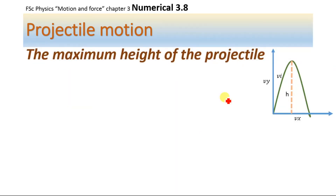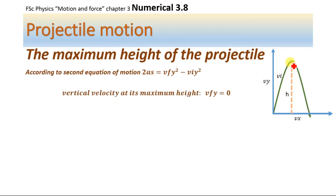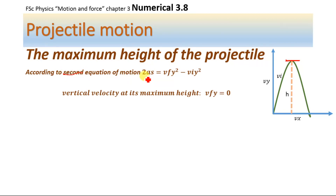What is the maximum height of the projectile? The maximum height is the height which a projectile reaches. This is the path followed by the projectile and this is the maximum height. For calculating the maximum height, we will use the third equation of motion: 2As = VF² minus VI².